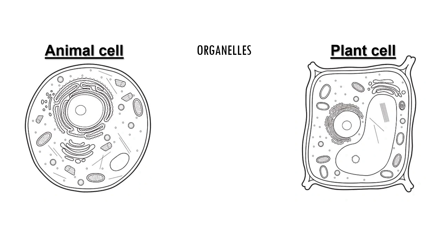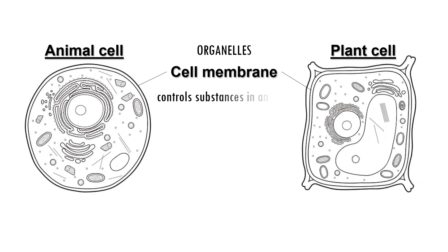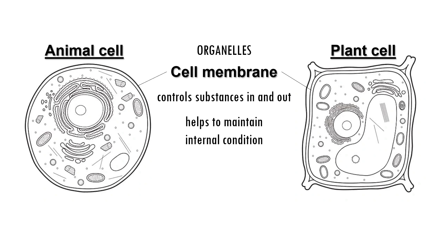Both animal and plant cells are surrounded by a cell membrane. This membrane controls which substances can pass in and out of the cell. It allows some chemicals to pass through but blocks others. This helps the cell maintain the right internal conditions.